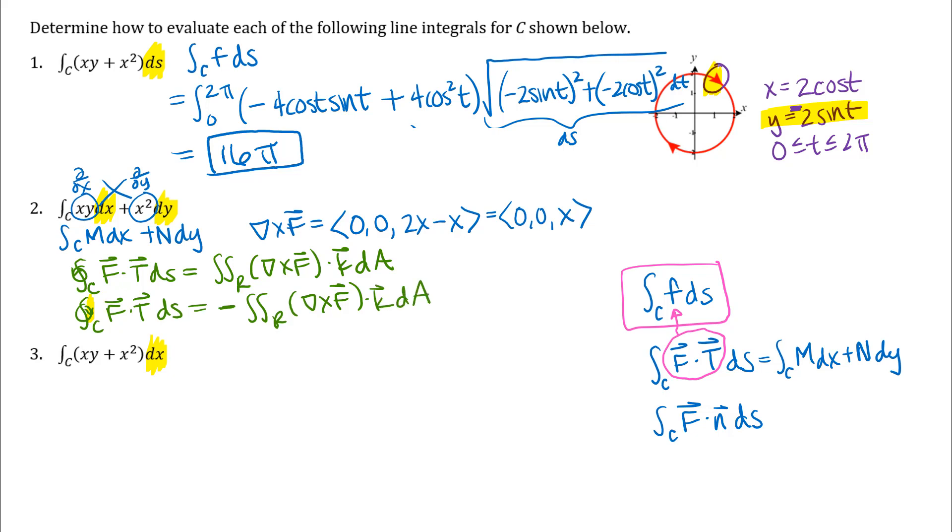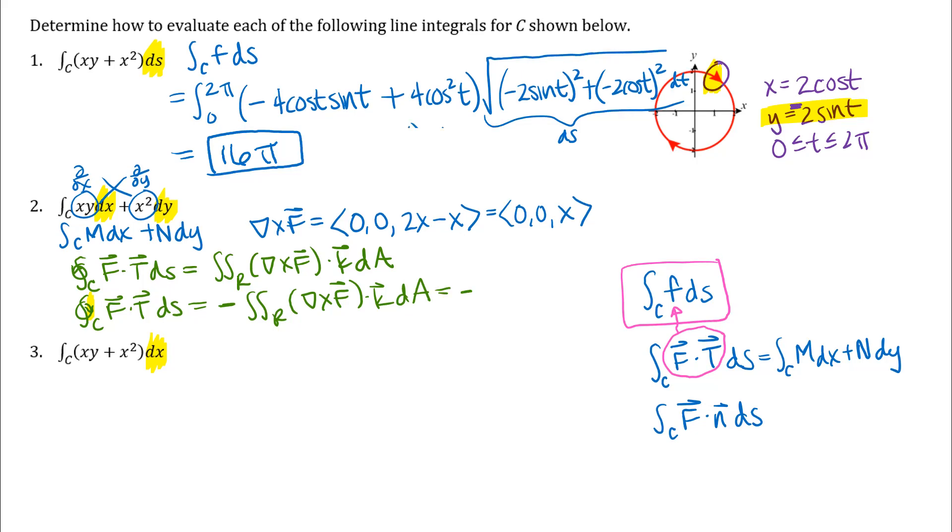I do have all of the other conditions met. I have a curve that is simple closed and piecewise smooth. My vector field F is continuous and has continuous first partial derivatives everywhere so on curve and the region enclosed by the curve. So I can go ahead and use Green's theorem and so when I do that I will get negative double integral over the region R.